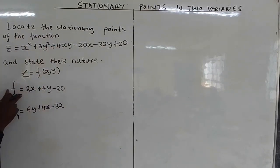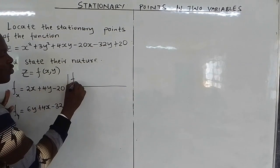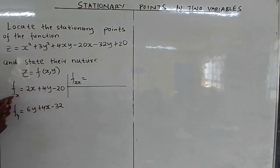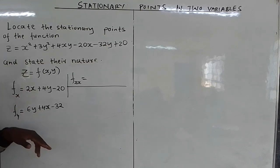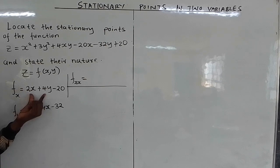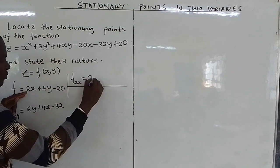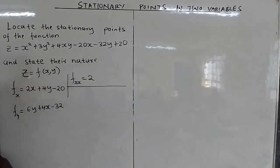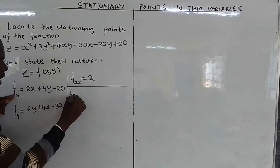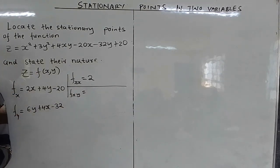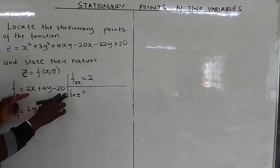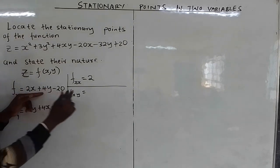Now we differentiate for the second time. Taking ∂z/∂x = 2x + 4y - 20 and differentiating again with respect to x: differentiating 2x gives 2, and there is no x in the remaining terms, so fxx = 2. Then differentiating ∂z/∂x with respect to y: there is no y in 2x, so that is 0, and differentiating 4y gives 4, so fxy = 4.